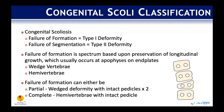Congenital scoliosis, not to be confused with neuromuscular, falls into two big buckets: failure of formation, defined as type one, versus failure of segmentation. Failure of formation is based on failure to preserve the ability for longitudinal growth at the apophyseal end plates, leading to development of wedge vertebrae or hemivertebrae. This can be partial or complete, which deals with whether or not the pedicles are still intact.